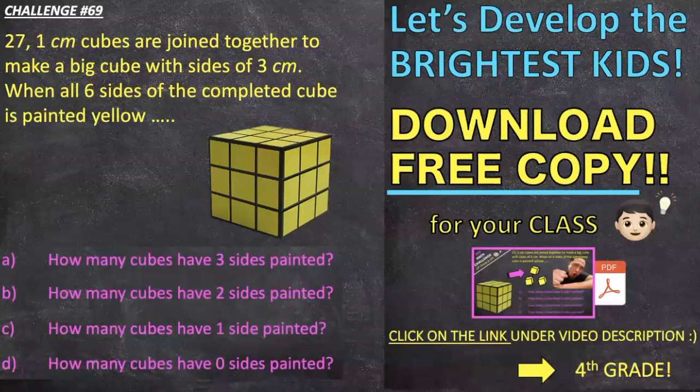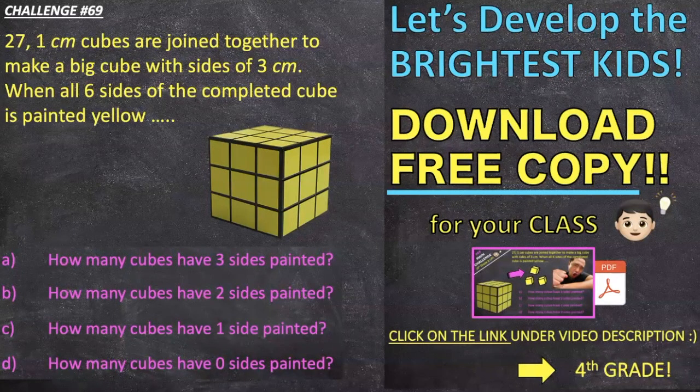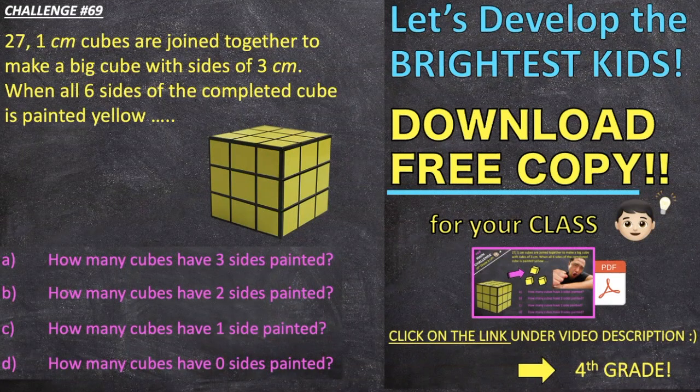Math challenge 69! 27 1cm cubes are joined together to make a big cube with sides of 3 cm. When all 6 sides of the completed cube is painted yellow...